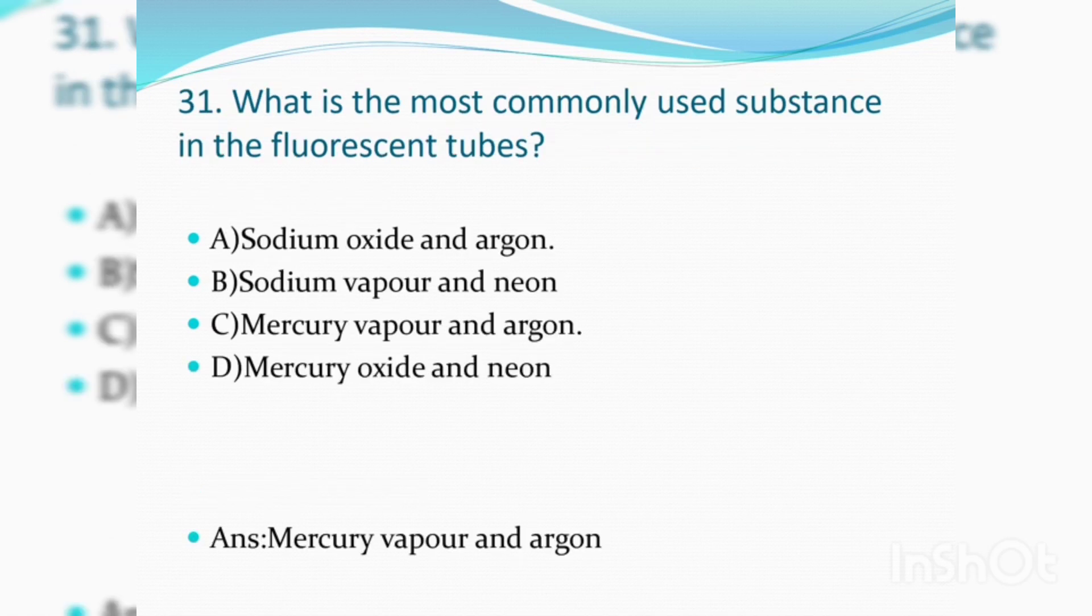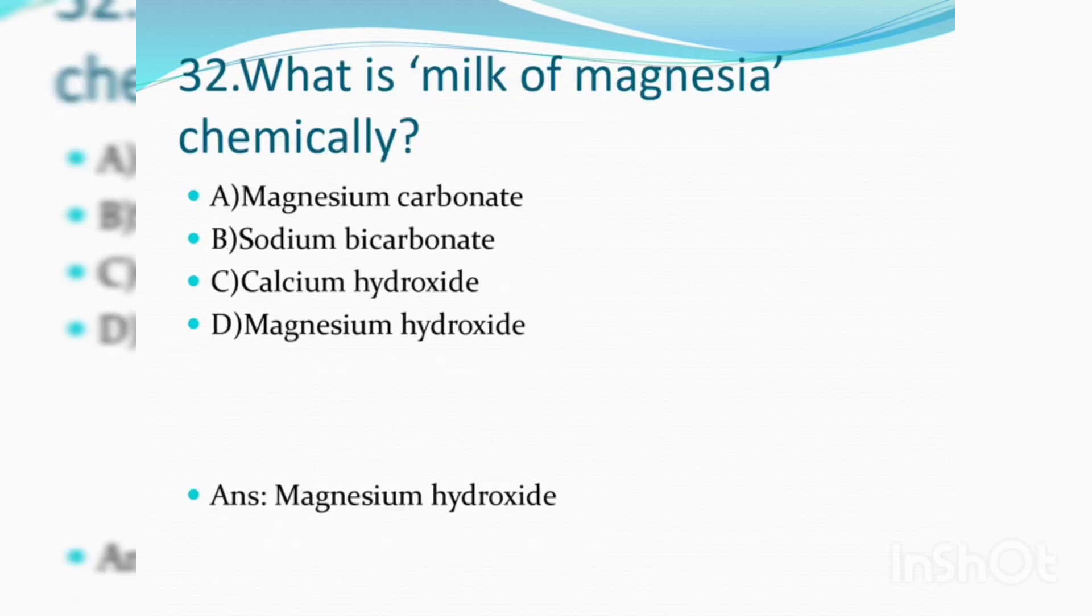What is the most commonly used substance in the fluorescent tube? Answer is mercury vapour and argon. What is milk of magnesia chemically? Magnesium hydroxide.